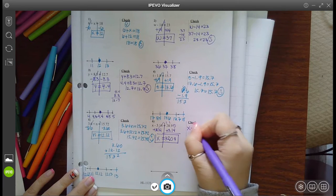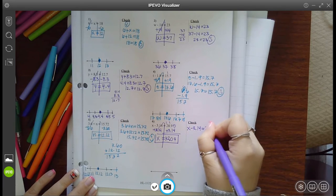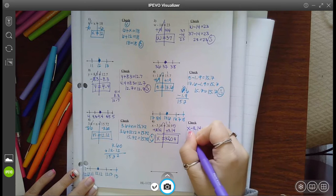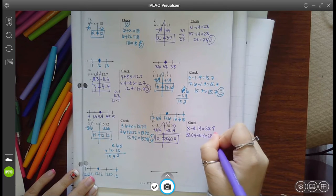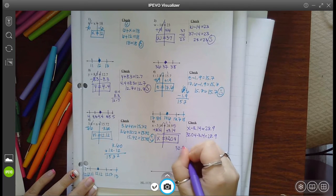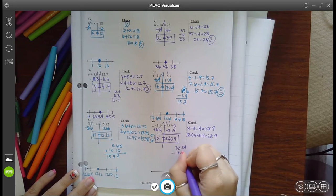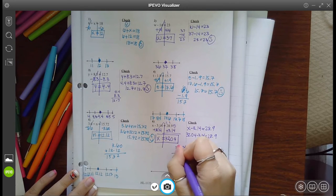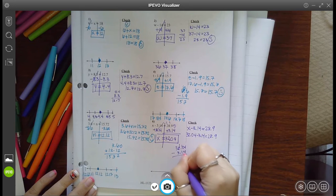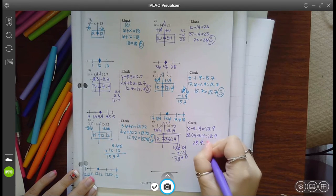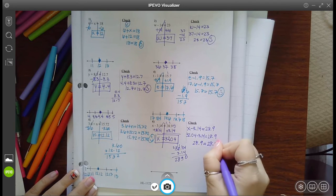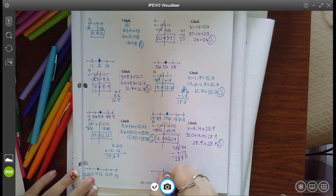Let's double check. x minus 3.14 equals 28.9. I think x is 32.04. So I'm going to check that over here. 4 minus 4 is 0. I need to borrow. 10 minus 1 is 9. And I need to borrow again. 11 minus 3 is 8. Bring down your 2. And you get 28.90 or 28.9, which is equal to the other side. So true statement, meaning 32.04 was the correct answer.